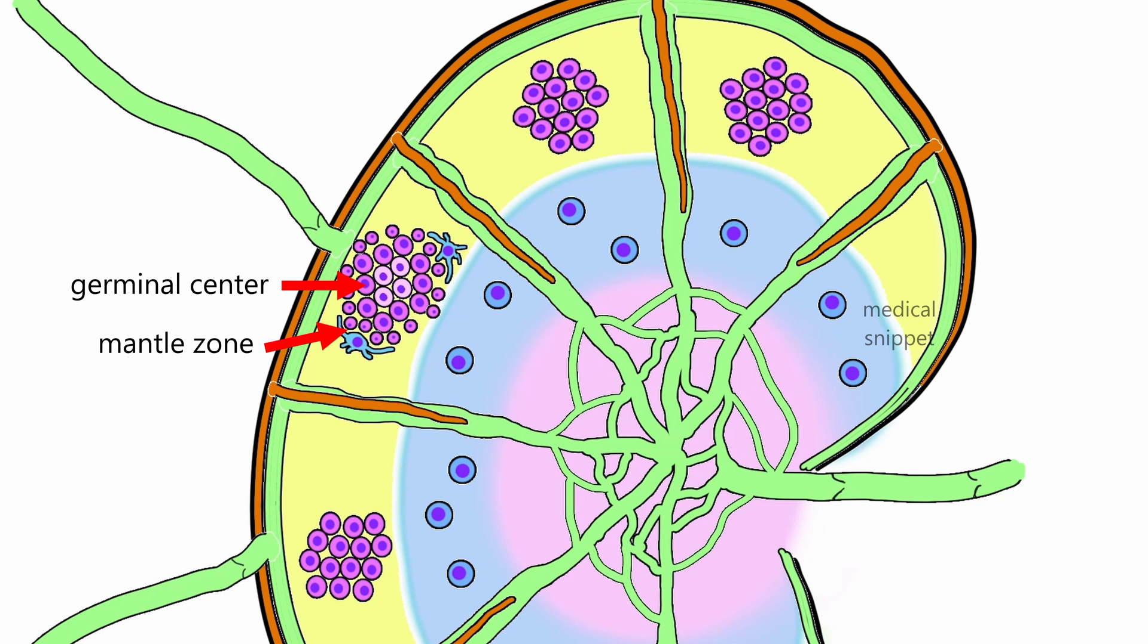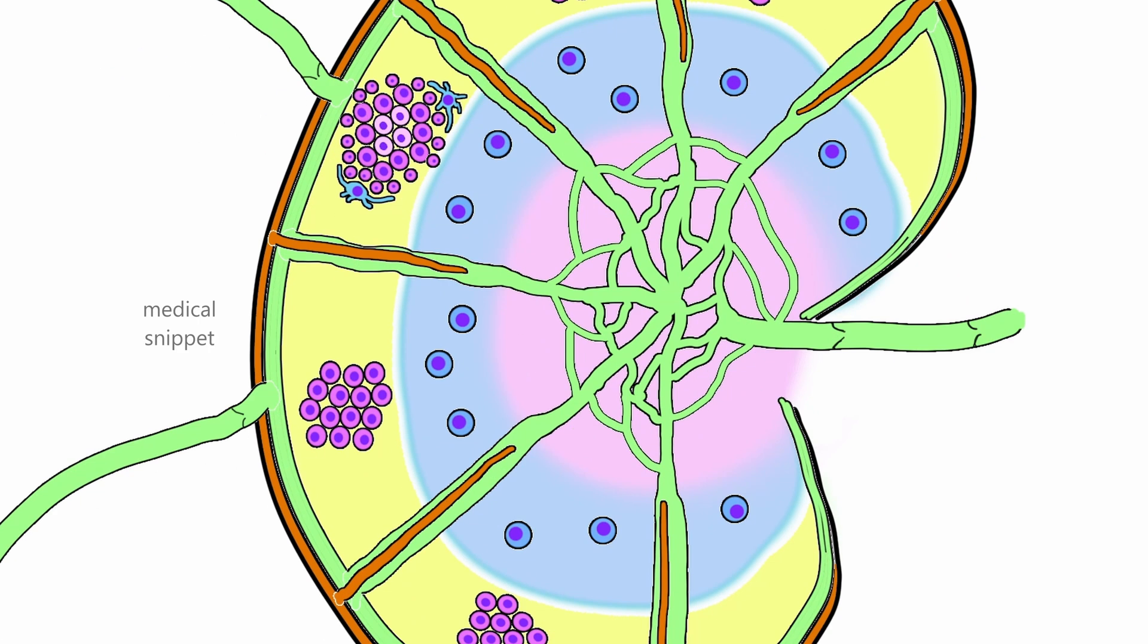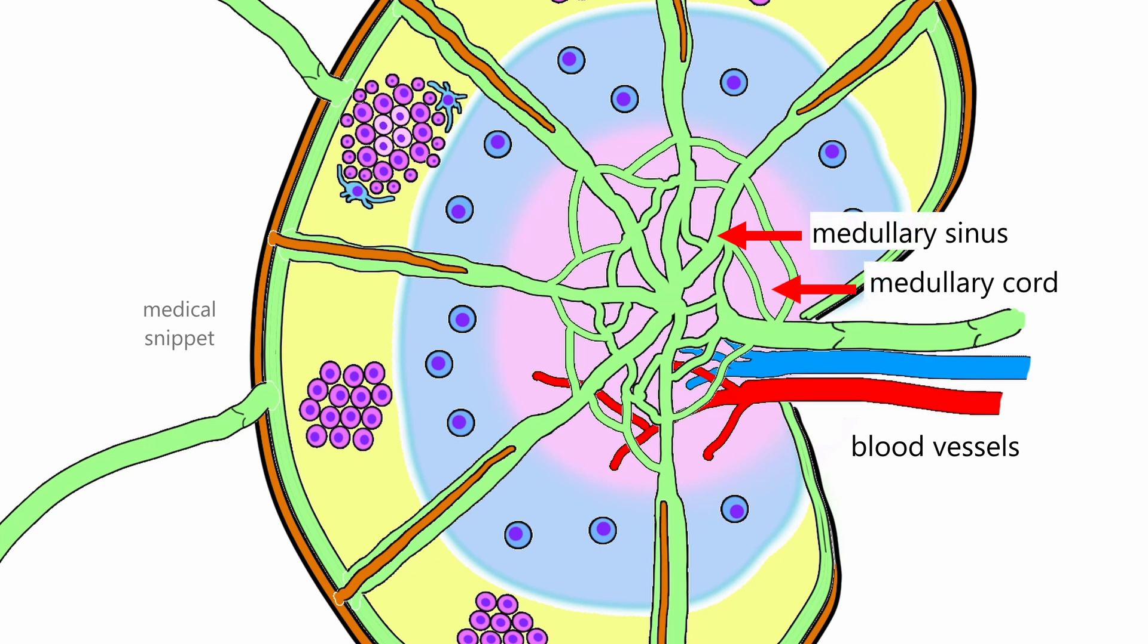Medulla is the innermost layer of the lymph node. It contains blood vessels, medullary sinuses, and medullary cords. The medullary cords contain antibody-secreting plasma cells, B cells, and macrophages.